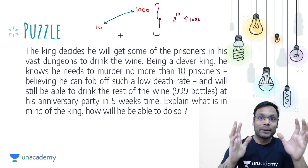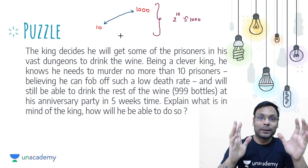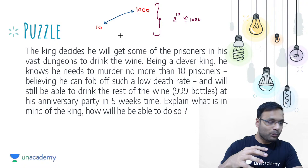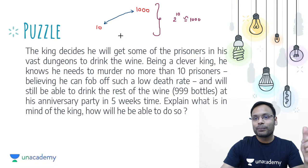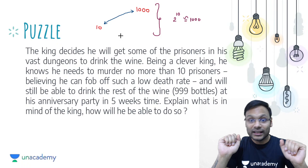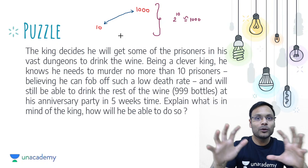A simple option would be to call 1000 people — one person drinks one drop from one bottle. 1000 people, 1000 bottles — whoever dies reveals which bottle has poison. But here the problem is we don't have 1000 people; we have only 10 prisoners. So the king took only 10 prisoners and with their help he will identify which bottle has poison.